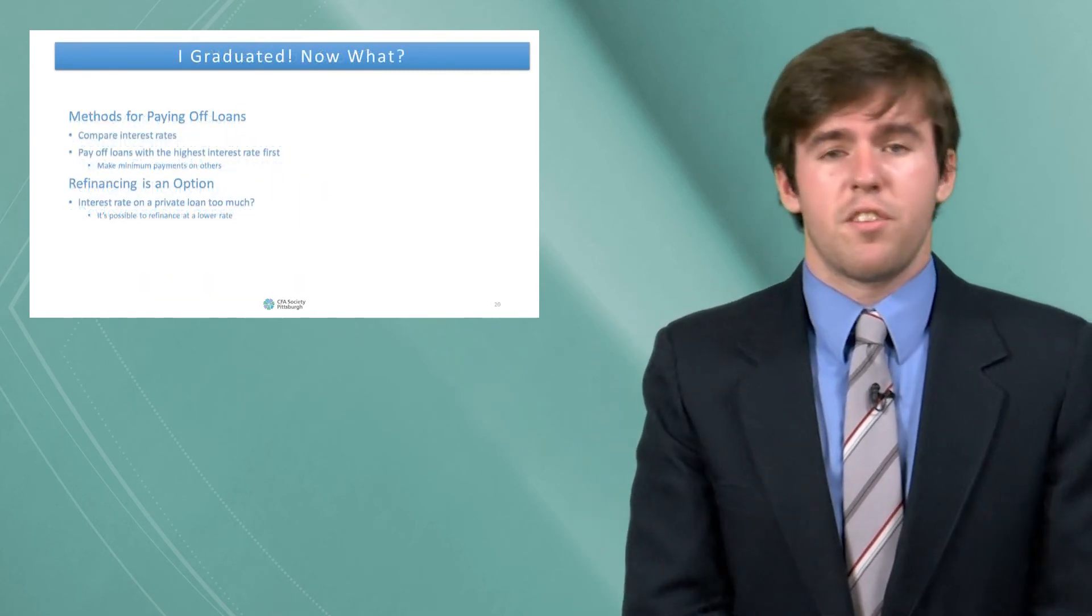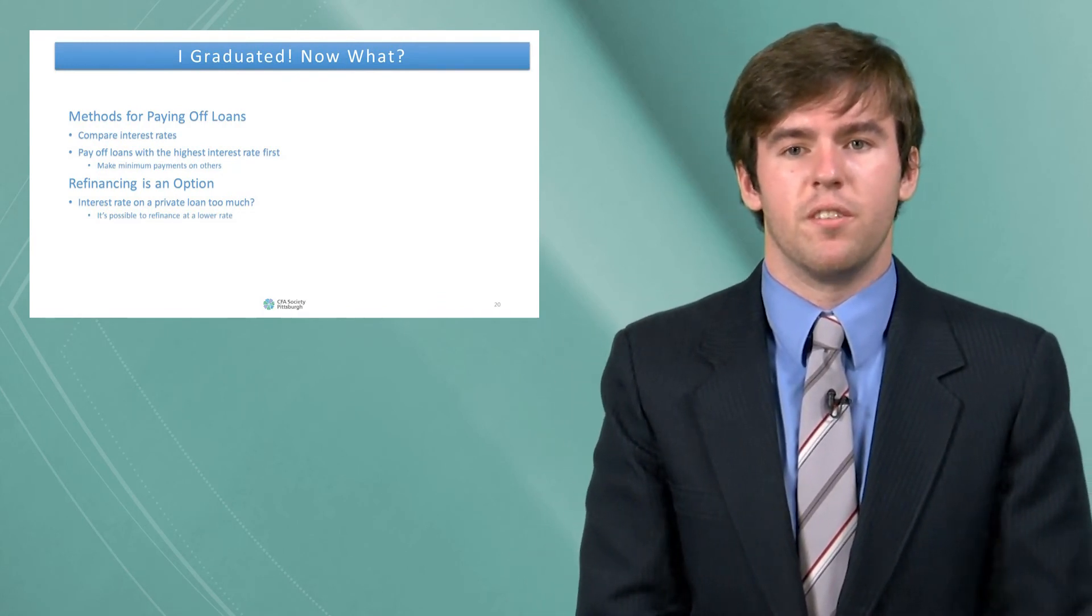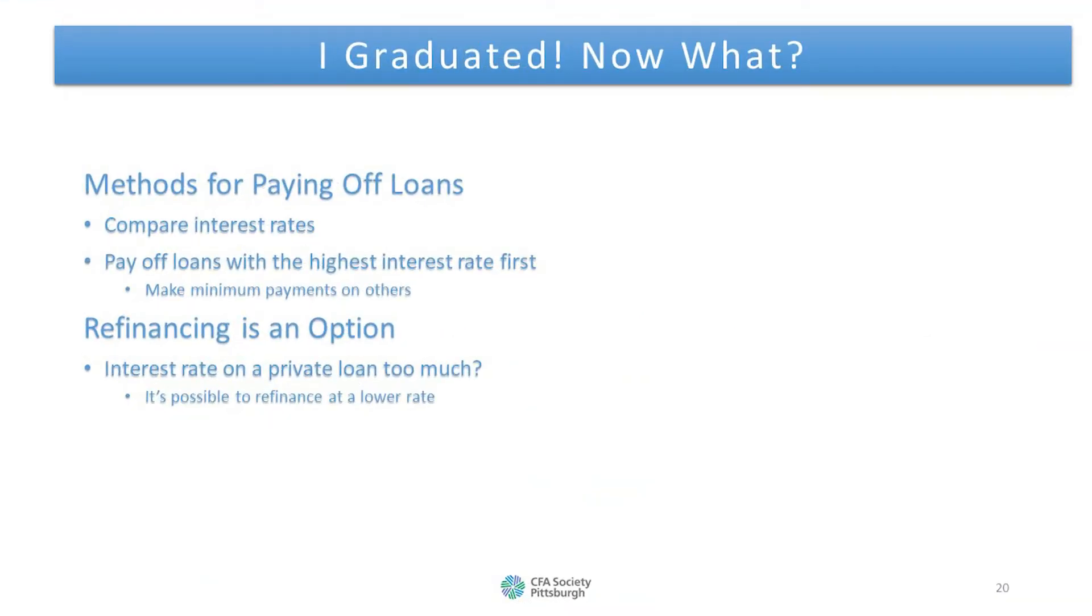All right, so now you graduated. Now what? You have all these student loans, how are you going to pay them? There are different methods for paying off different loans. First thing you want to do is compare the interest rates. Make sure that you can have a lower interest rate if you can. You want to pay off loans with the highest interest rate first. It may be daunting to see all these loans with different interest rates, but the best thing to do financially is to pay the minimum payments for all of your other loans but really focus on nailing down that loan with the highest interest rate. Refinancing is an option. Many banks can give out personal loans and sometimes these personal loans can have a lower interest rate than federal loans.